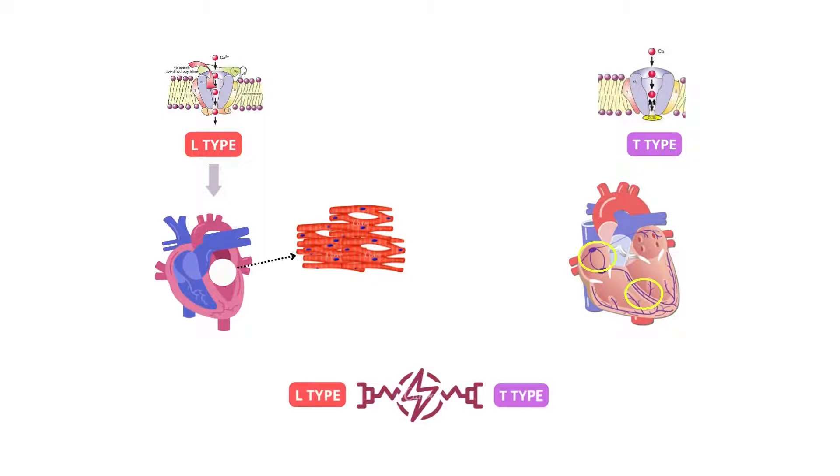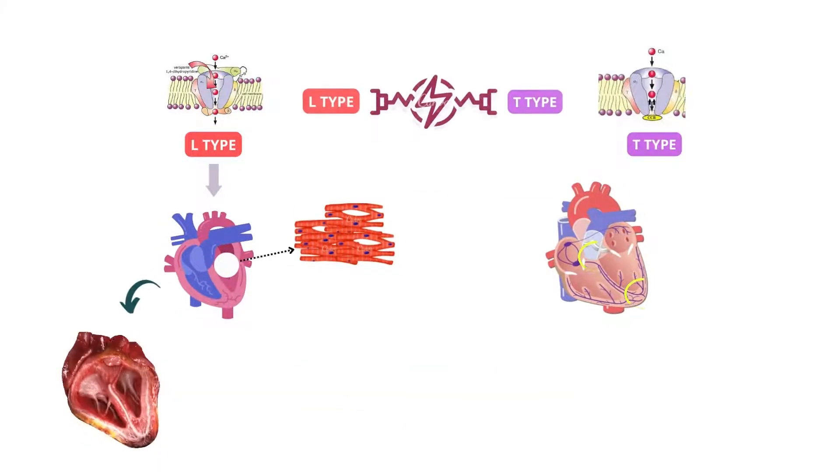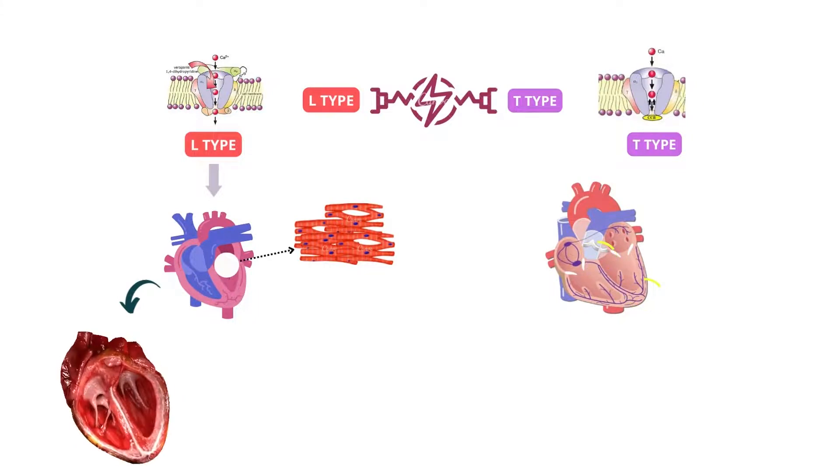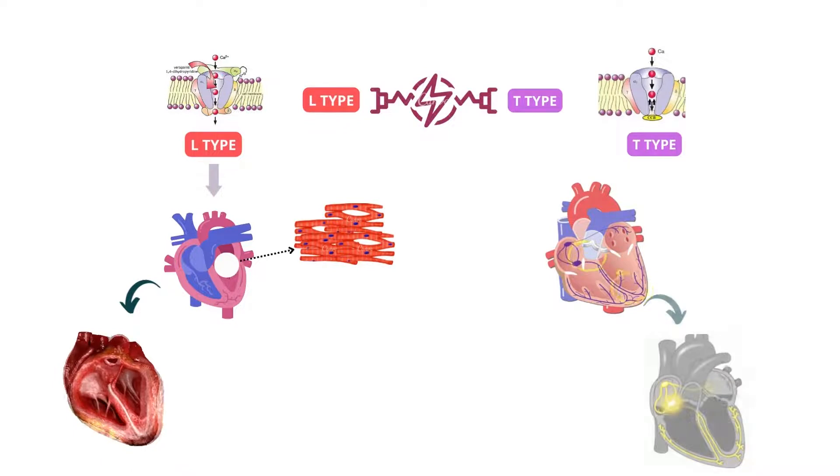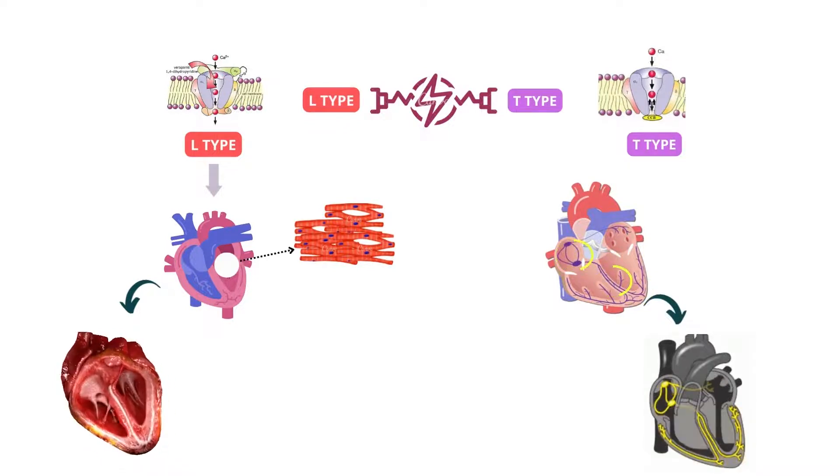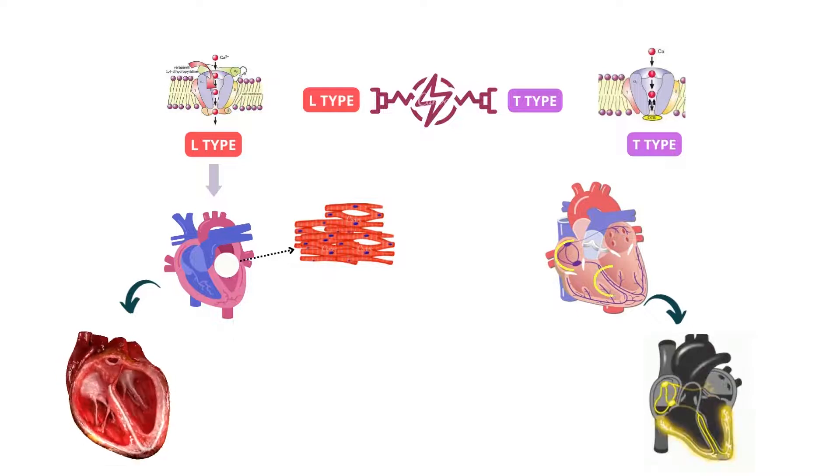Both of these channels are voltage-gated, means they permit or block the passage through a cell membrane in response to an electrical stimulus. L-type, which presents in all cardiac cells, is involved in myocardial contraction. On the other hand, T-type helps in impulse generation through the SA node or pacemaker of the heart and conduction through the conduction pathway of the heart.